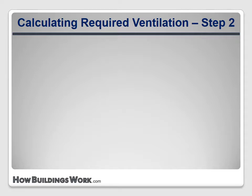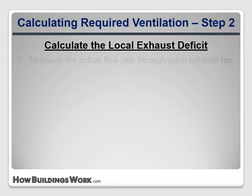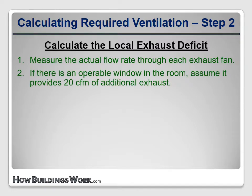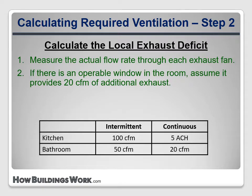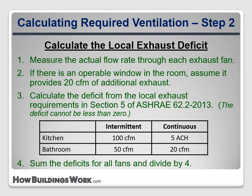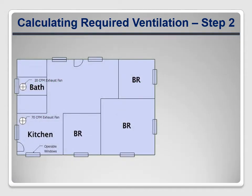But that assumes strong local exhaust rates, which isn't the case in this house, so we'll need to add whole house ventilation to account for this. First, we measured the actual flow rate through each fan. We visually determined that the kitchen and bathroom each had operable windows. Now we can look up the required flow rate for those rooms: both fans are operated intermittently, so the kitchen should be 100 CFM and the bathroom should be 50 CFM. The final step is to sum up all the deficits and divide by four.